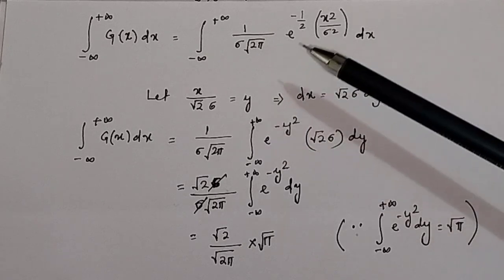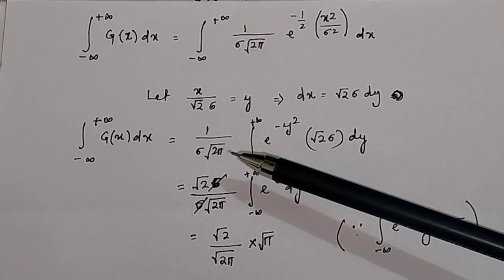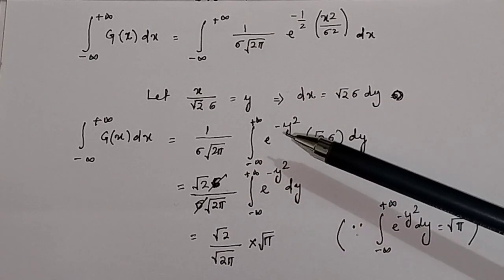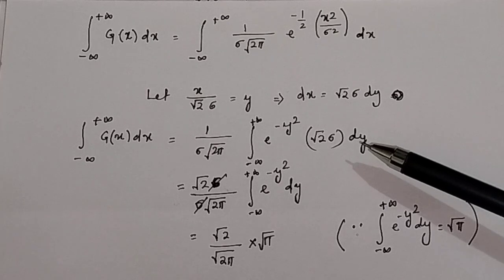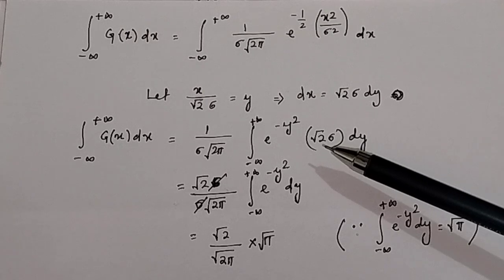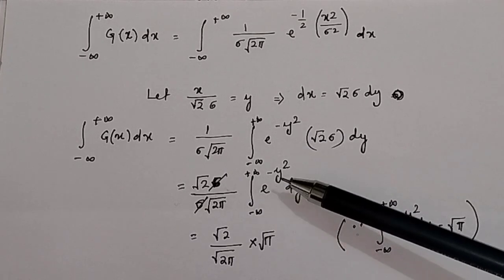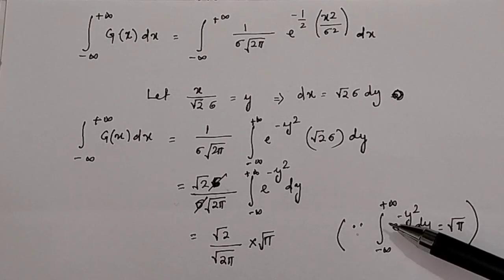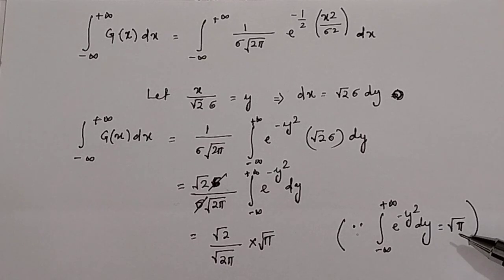Substituting the value of y, and taking 1 over sigma times square root of 2 pi as a common factor, inside the integration we have e to the power of minus y squared times root 2 sigma dy. Taking root 2 sigma outside the integral, we get the integral from minus infinity to plus infinity of e to the power of minus y squared dy, which is known to equal square root of pi.